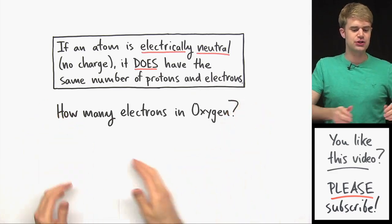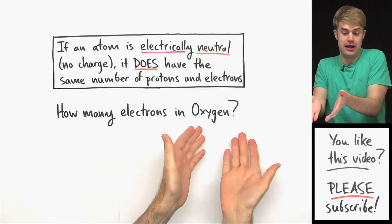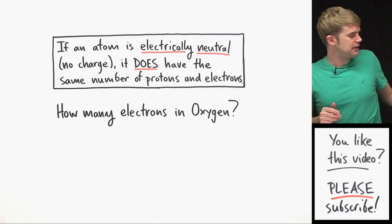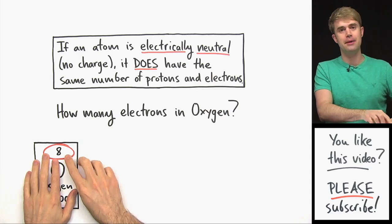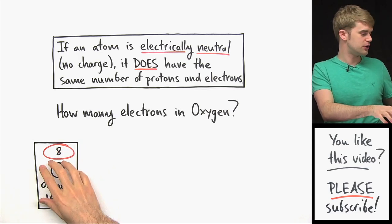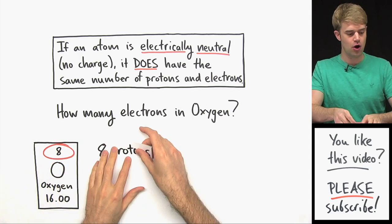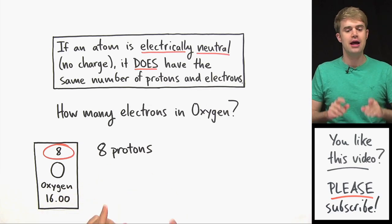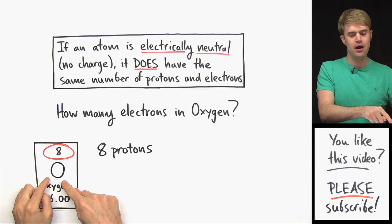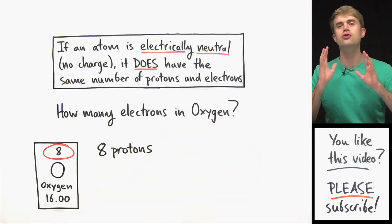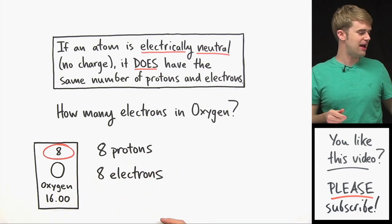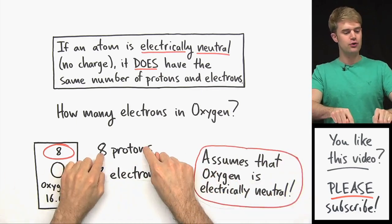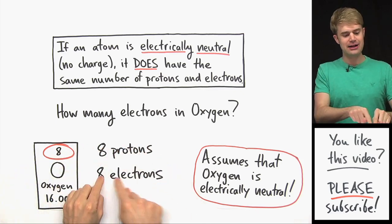So if somebody asks you how many electrons are in oxygen, you might take a look at the periodic table and find oxygen. This number up here is the atomic number, which gives you the number of protons. So we can say that there are eight protons in oxygen. Now if we assume that we're talking about an electrically neutral oxygen atom, then this atom is also going to have eight electrons.